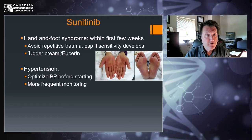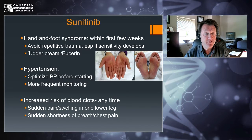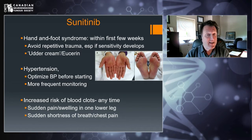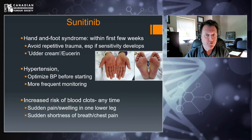Sunitinib can also drive up blood pressure, so it's important to optimize blood pressure before starting, and you may need more frequent monitoring if you're treated for hypertension — especially in the first few months — to ensure antihypertensives can be adjusted. Unfortunately, Sunitinib also has a risk of blood clots, which can happen at any time. Any sudden pain or swelling in one leg, or sudden shortness of breath or chest pain, means a trip to the emergency room to be assessed for blood clots. It can be easily treated and is very important not to miss.